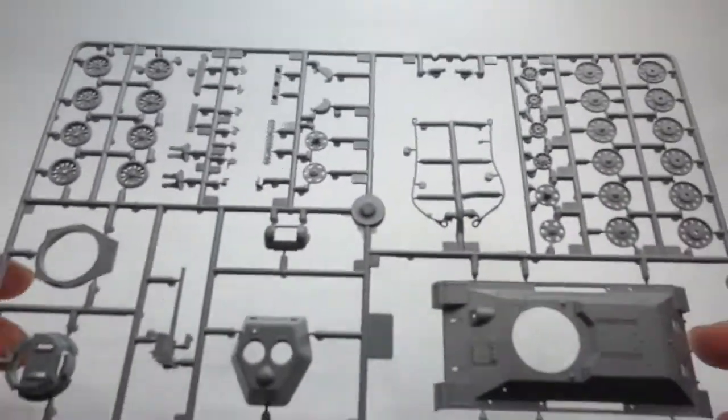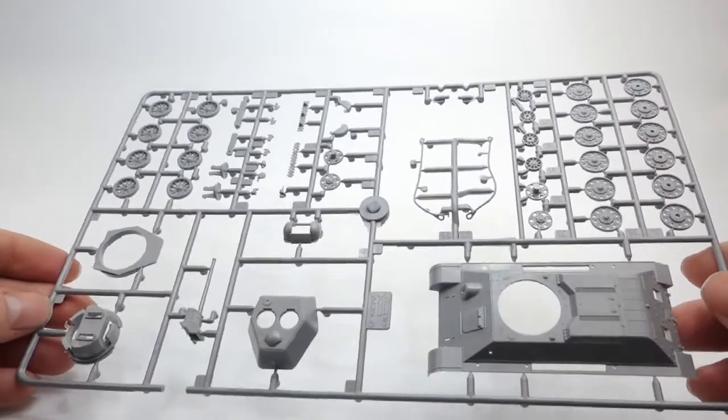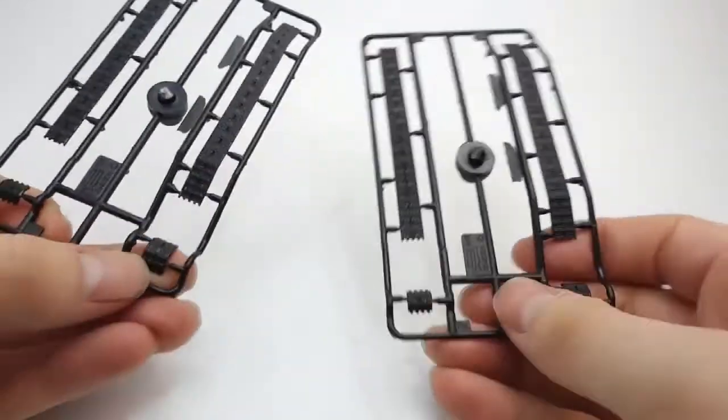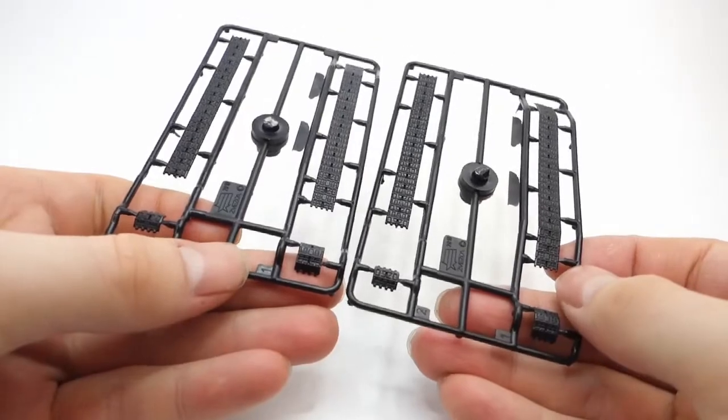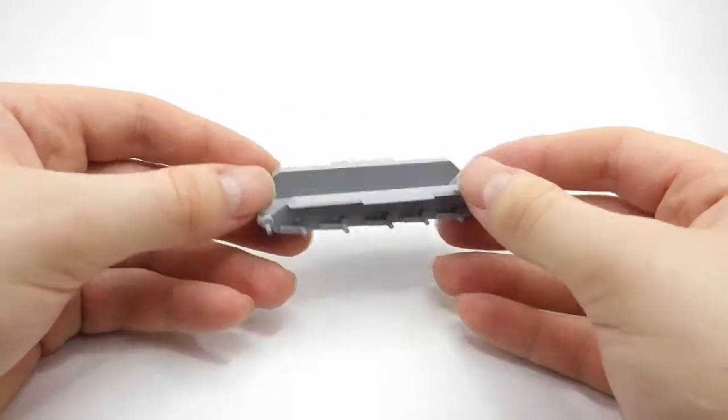In a similar manner to the SU-85 from previous video, all the main components of the vehicle are placed on one big sprue. In this case however, we get two identical sprues for left and right track, and finally the lower hull which is molded as a single piece.